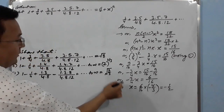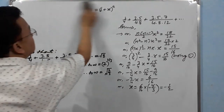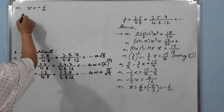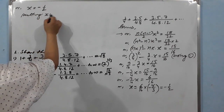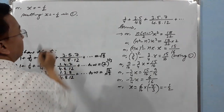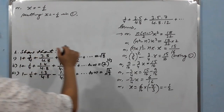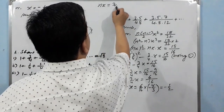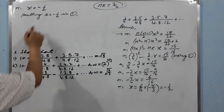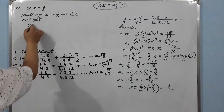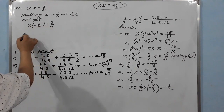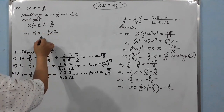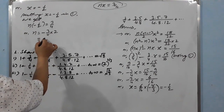Now we also need the value of n. Putting x = −1/2 into the first equation nx = 3/4: n × (−1/2) = 3/4, so n = −(3/4) × 2 = −3/2. Therefore n = −3/2.